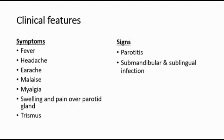The symptoms of mumps include fever, headache, earache, malaise, myalgia, swelling and pain over the parotid gland, and trismus, which is pain on eating and drinking. For signs, there is parotitis — enlargement of the parotid glands — initially unilateral, becoming bilateral within one to five days. The skin over the parotid gland is edematous, red, warm, and tender to touch.